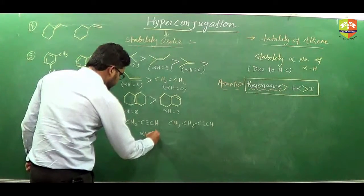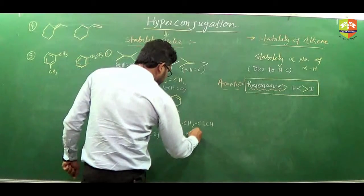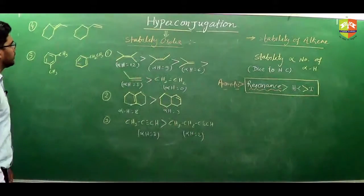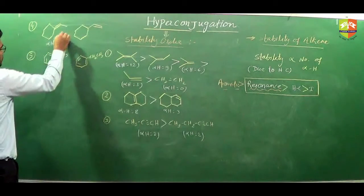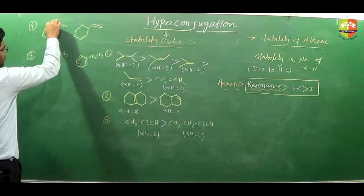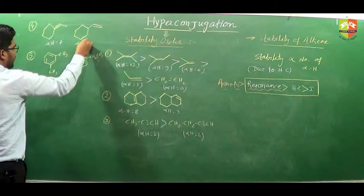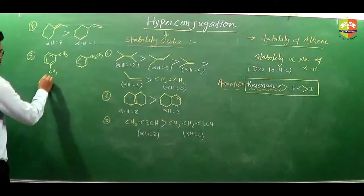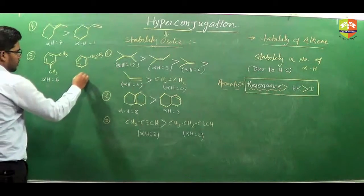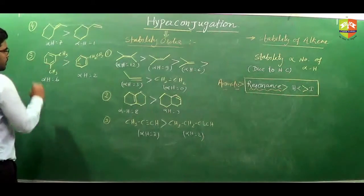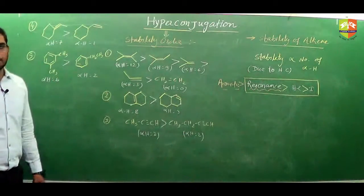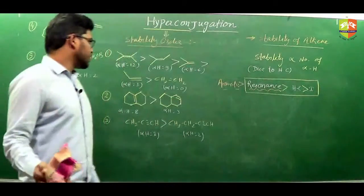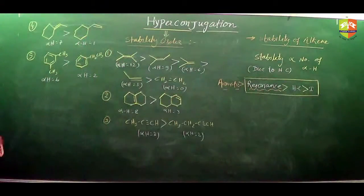Number of alpha hydrogens here is 3, and here it is 2. More alpha hydrogens means more hyperconjugative structures, so more stability. Counting further: 3, 2, 5 and 2 gives 7, number of alpha hydrogen is 1. Then another case: number of alpha hydrogens is 3 and 3, giving 6; another has 2. The stability orders follow accordingly. Like this we can compare the stability of alkene when only hyperconjugation is possible.